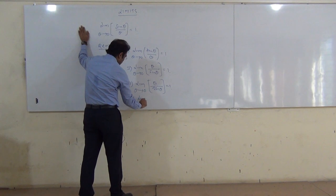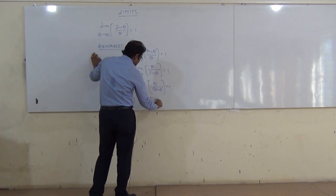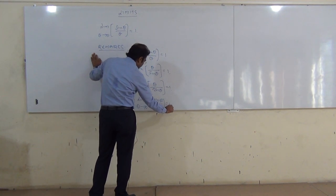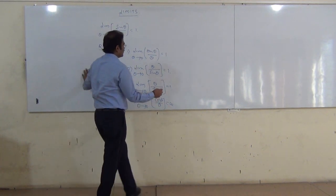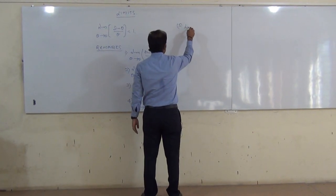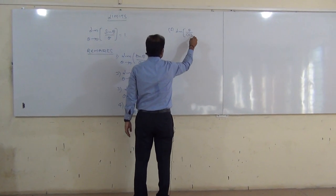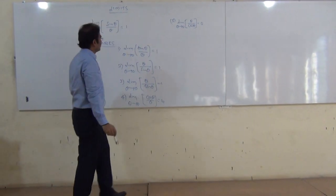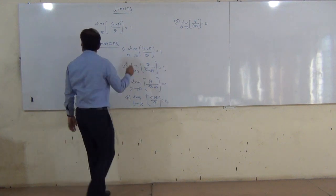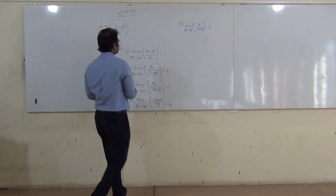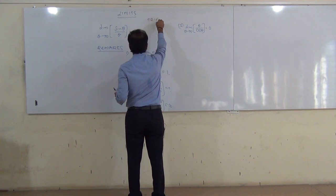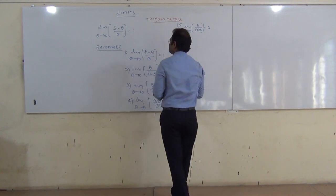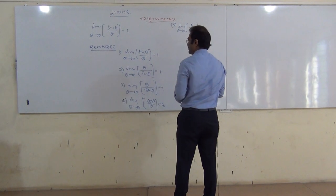Fourth remark: limit of cos θ / θ as θ tends to 0 is equal to infinity. And fifth remark: limit of θ / cos θ as θ tends to 0 is equal to 0. So these are all trigonometric identities.